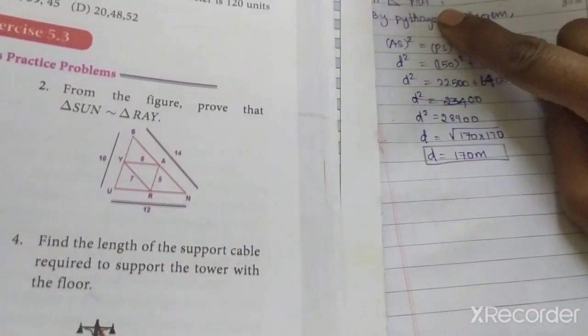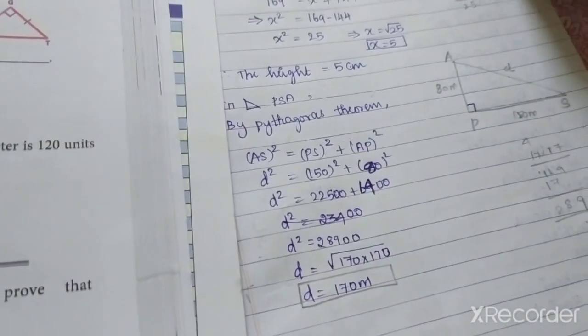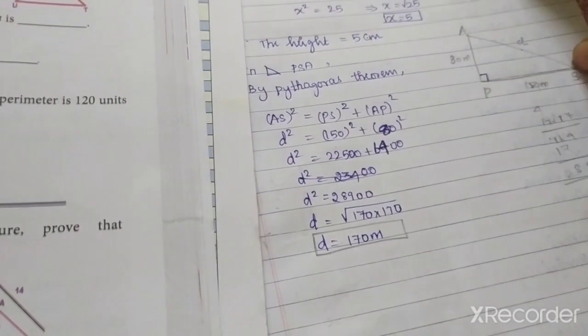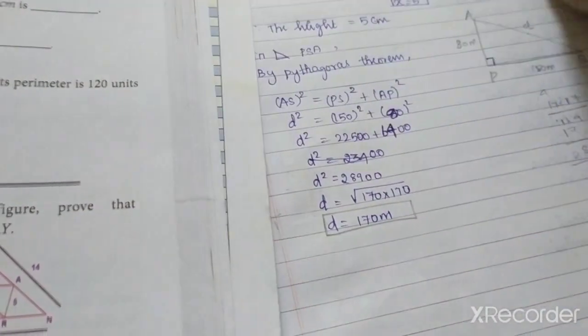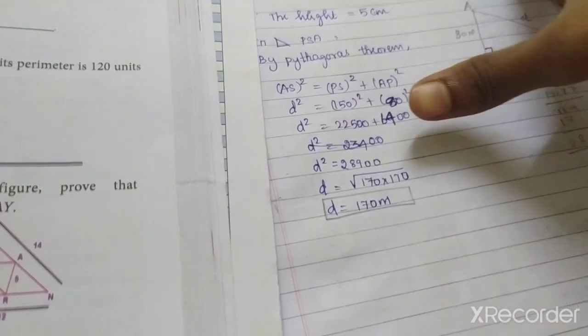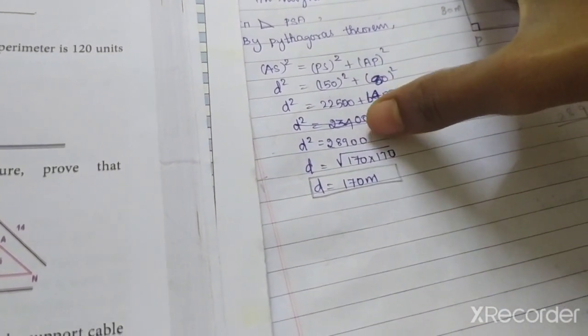By Pythagorean theorem, PE square equals PS square plus SE square. PS is 150, SE is 80. So 150 square is 22500 plus 80 square is 6400, adding this 28900.